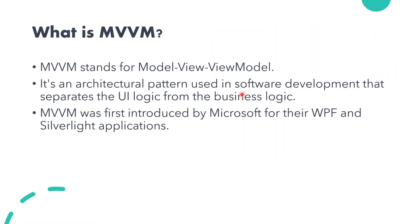What is MVVM? MVVM is a basic and well-known architecture pattern in software development. MVVM stands for Model-View-ViewModel. It is an architecture pattern used in software development that separates the UI logic from the business logic. MVVM was first introduced by Microsoft for their WPF and Silverlight applications.